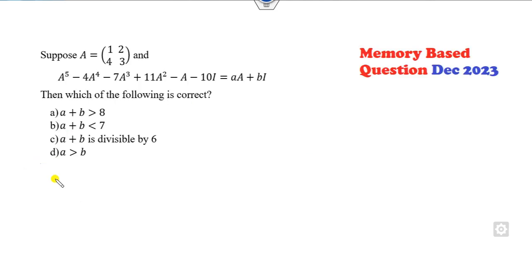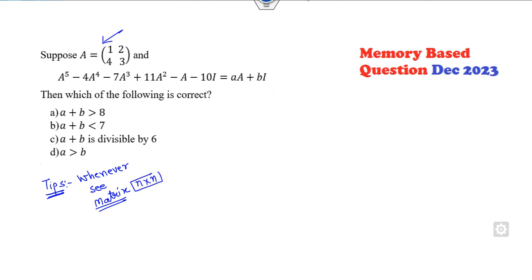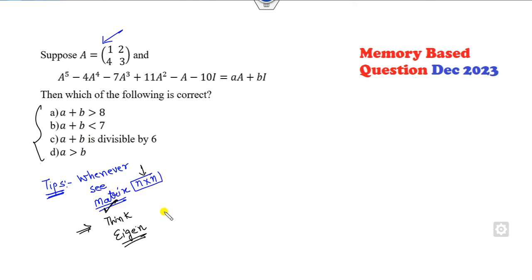Now let's start. Before I begin this question, remember my tip: whenever you see a matrix — whatever the matrix is, whether n×n — always apply the concept of the eigenvalue problem. Even if none of the options appear related to eigenvalues, always apply the eigenvalue concept. You can solve the problem within 10 to 15 seconds.